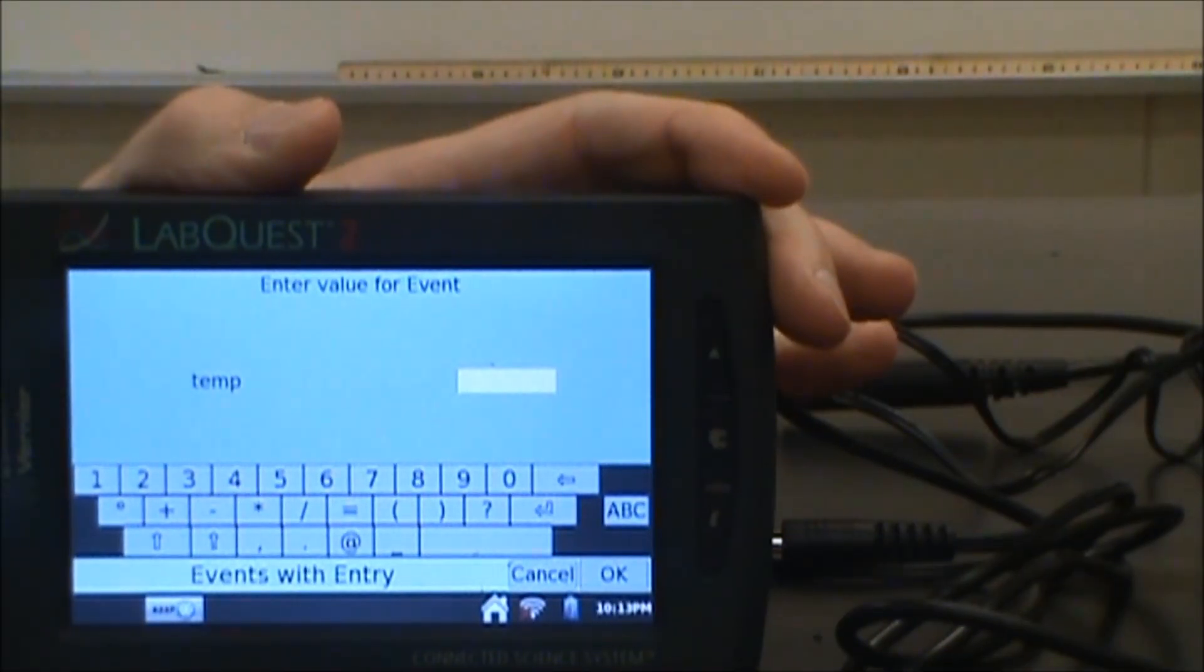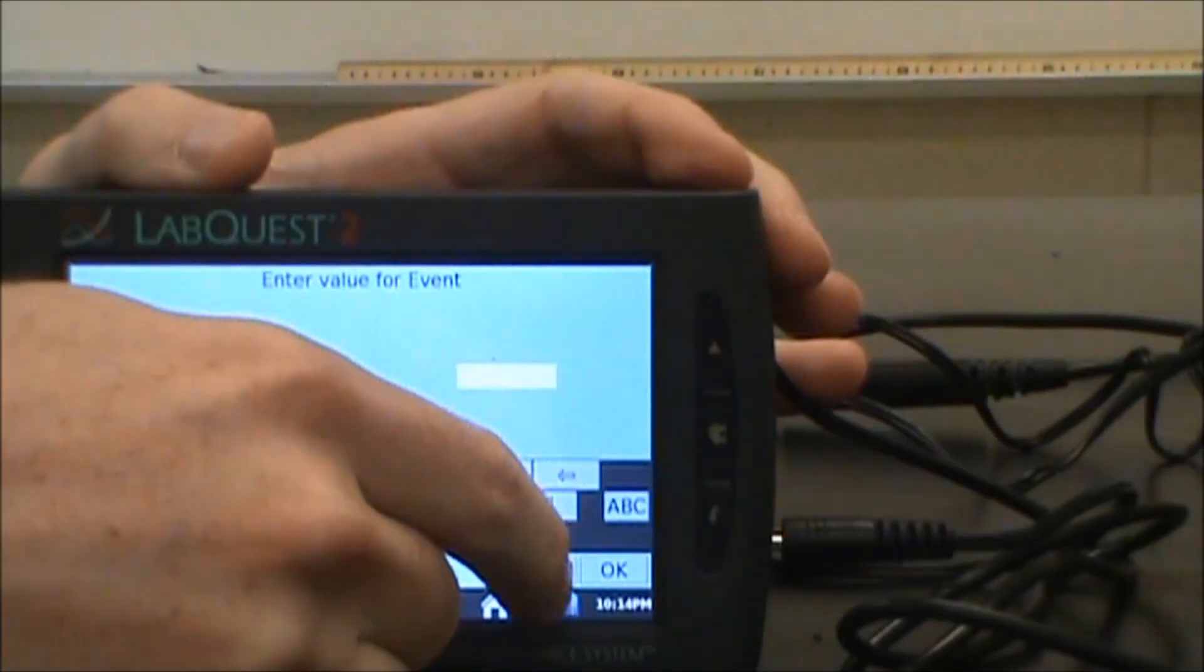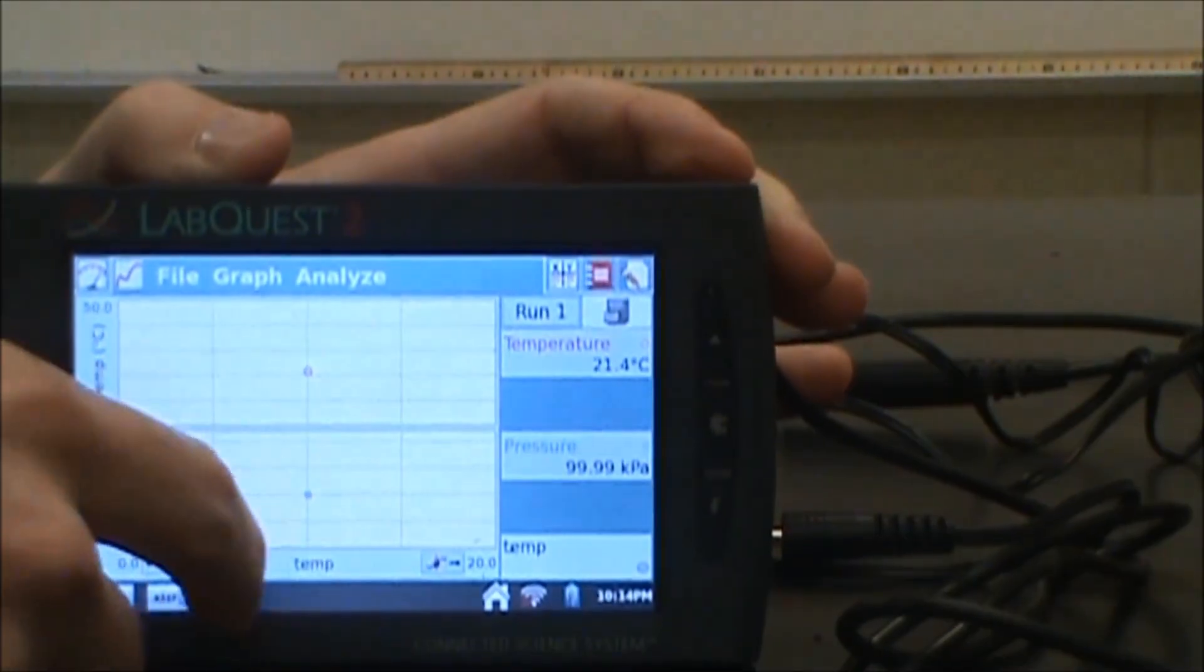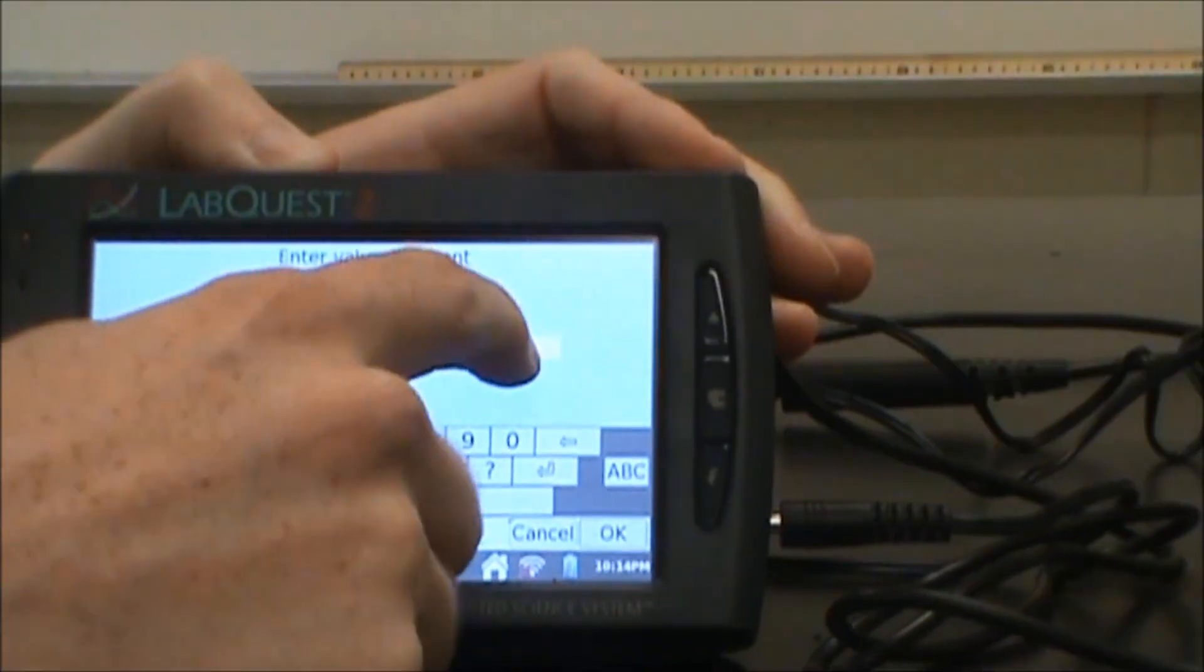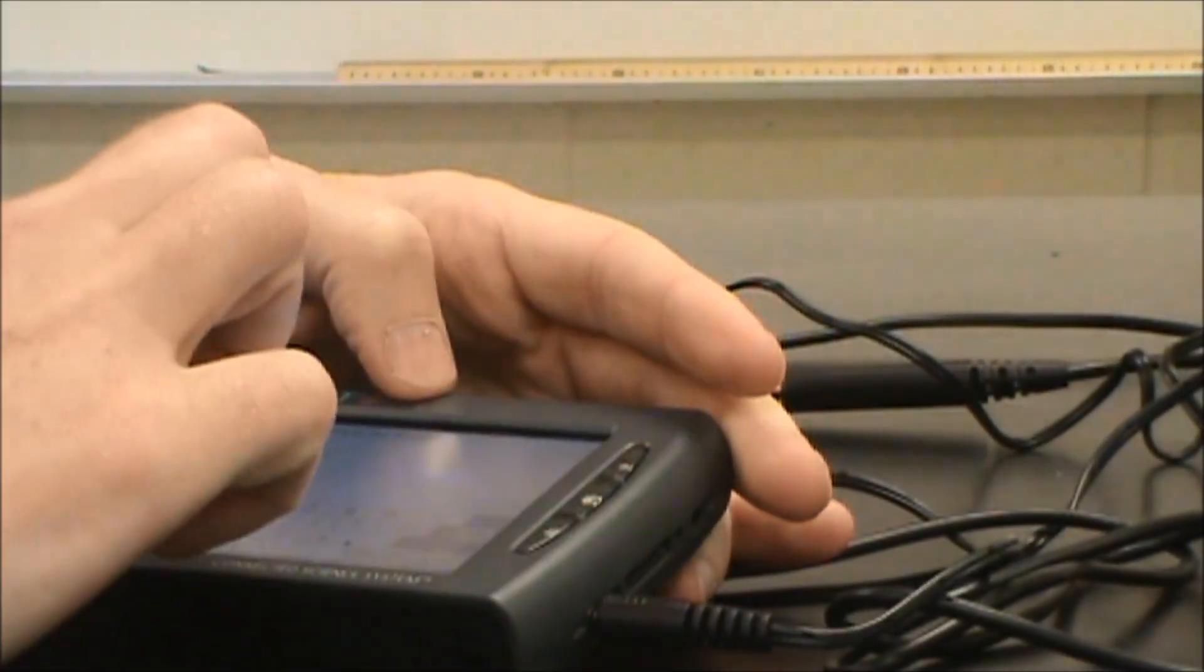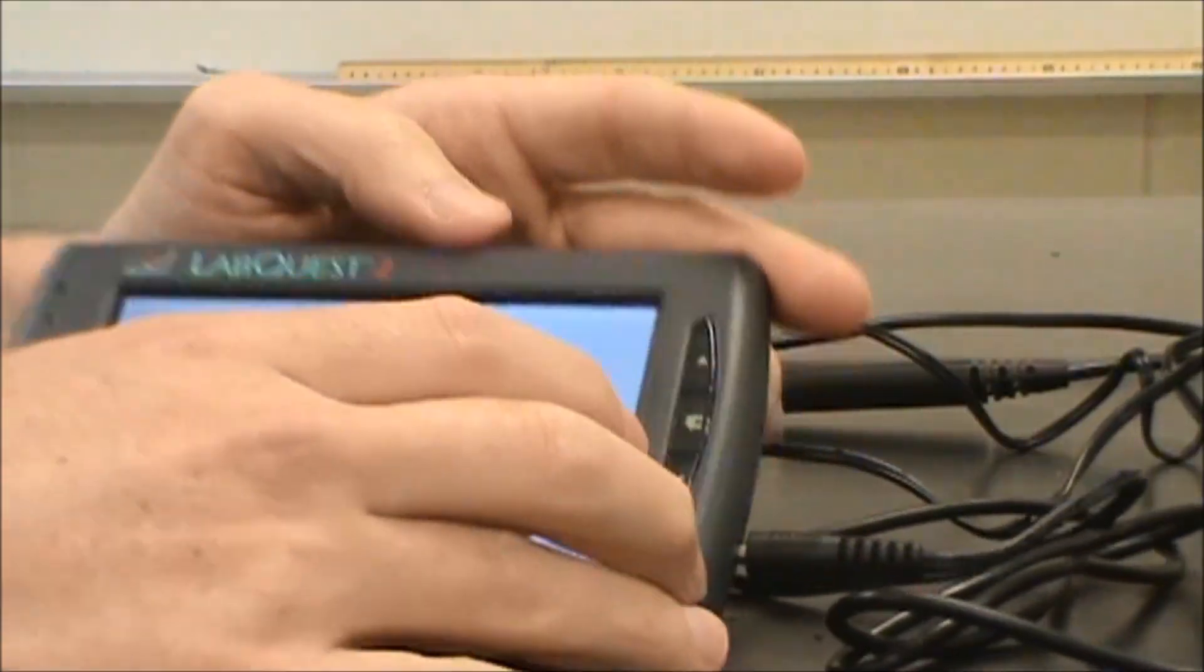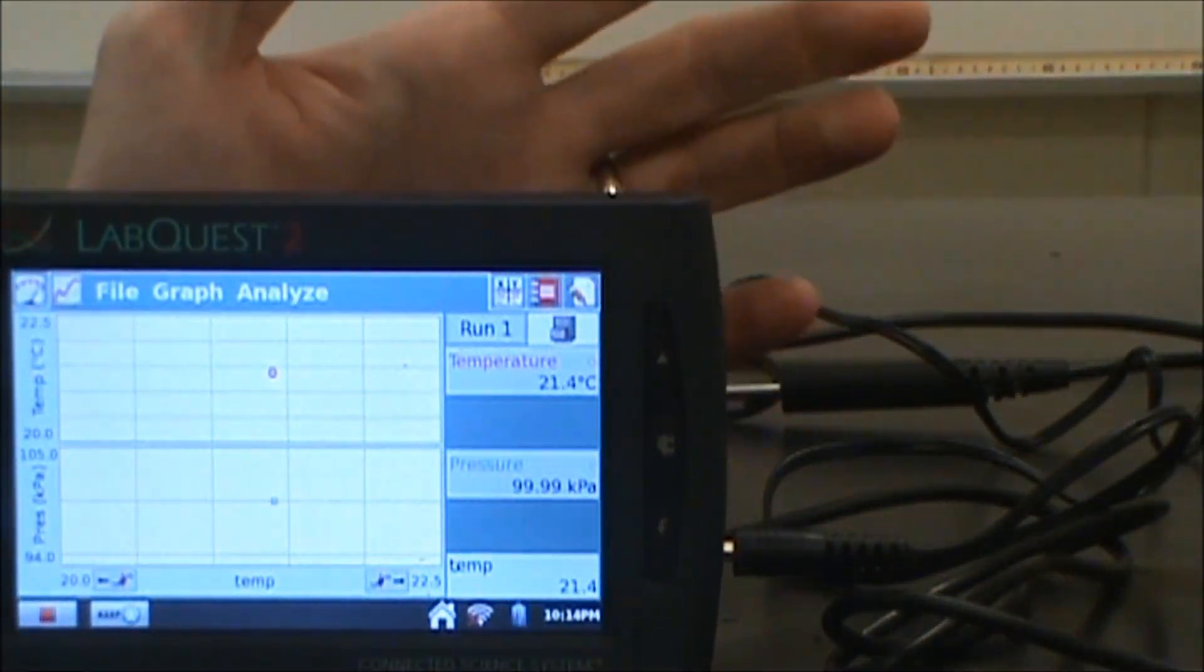That's going to then have me type in what the particular temperature or pressure is. For this, I want to do keep and I'm going to type in the temperature, which is currently 21.4. So I'm going to type into here 21.4 like that, and then I'm going to hit OK. Now I have a data point.